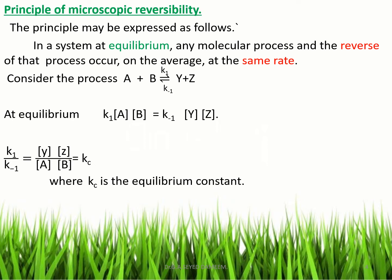Now consider the process A + B ⇌ Y + Z, where A and B are reactants and Y and Z are products. The rate constant for the forward reaction is K1 and for the backward reaction is K-1. At equilibrium, the rate of forward reaction equals the rate of backward reaction: K1[A][B] = K-1[Y][Z]. The ratio K1/K-1 equals the concentration of products divided by concentration of reactants, which is the equilibrium constant.